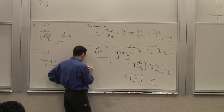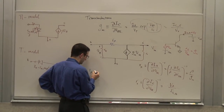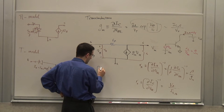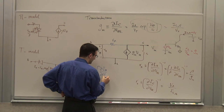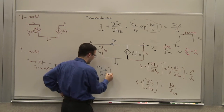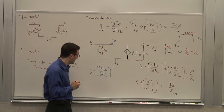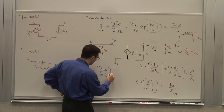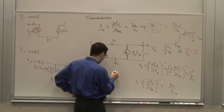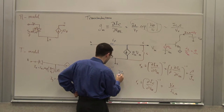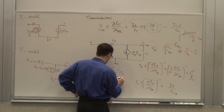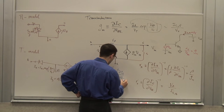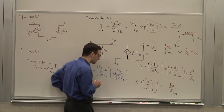Rmu by definition is related to dIB/dVCB. I can rewrite this as (1/beta) times dIC/dVCB. In the forward active region, VCB = VCE − VBE, and VBE is approximately constant at about 0.7 V in forward active, so this is approximately dIC/dVCE, which I've already calculated as 1/Ro. So Rmu = beta times Ro.